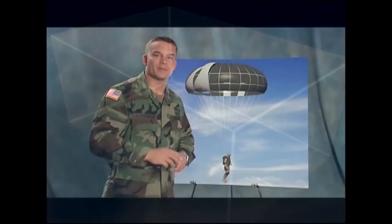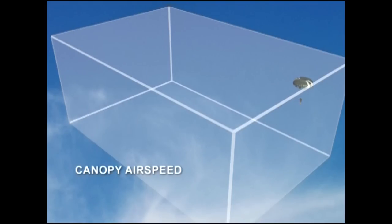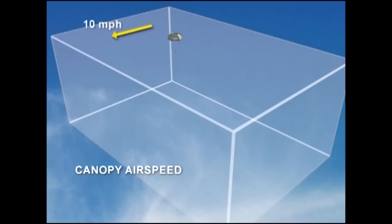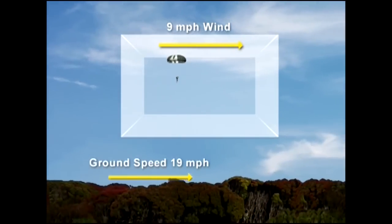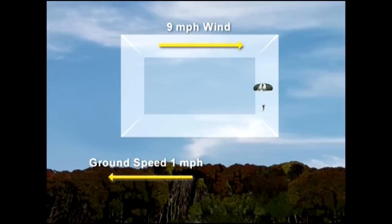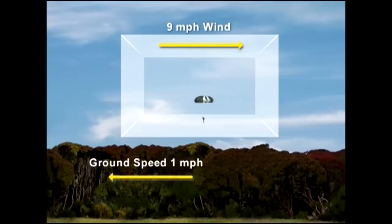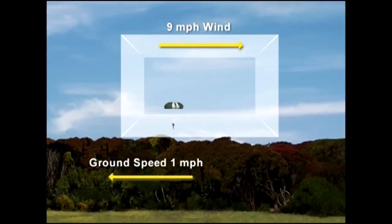It may help to think of the wind as a block of air that moves across the ground. If we can't see the ground, we can't see that the block of air is moving. Inside this block of air, the canopy moves forward at a constant rate no matter what direction it's facing. It's only when the ground is added to the picture that ground speed becomes apparent. The block of air moves across the ground and the canopy moves within it — air speed is always the same, but ground speed depends on which way the canopy is faced.